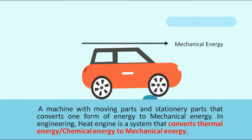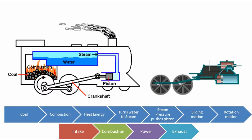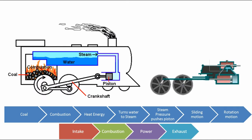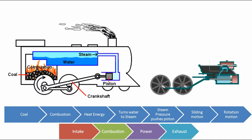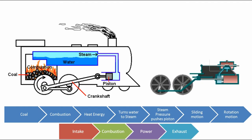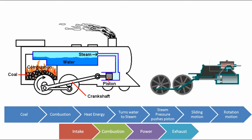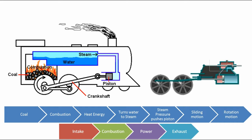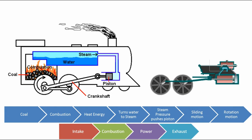For example, a steam engine of a train burns coal to release heat energy. This heat boils the water in the kettle and turns it into steam. Steam is then piped into the cylinder, causing the piston to move. This in-and-out movement, also known as reciprocating motion, is converted to rotational motion with a series of linkages, as shown in the figure.